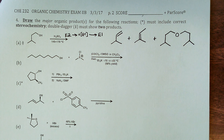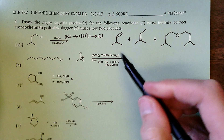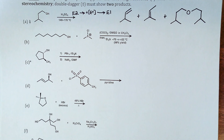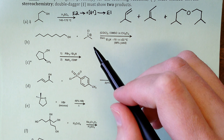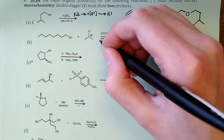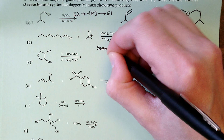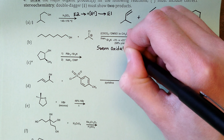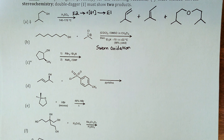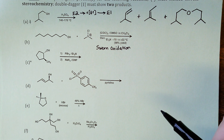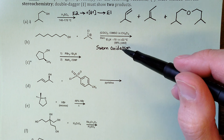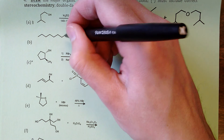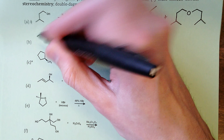Part b: Swern oxidation. The active species is the chlorodimethylsulfonium salt. Oxalyl chloride and DMSO form this intermediate, and with addition of triethylamine, the primary alcohol (1-octanol) is oxidized to the aldehyde octanal.